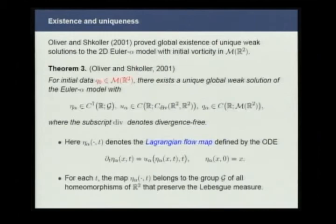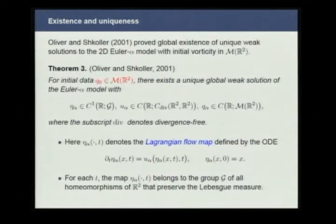Formally, we recover the Euler equation when alpha tends to zero. Oliver and Shkoller in 2001 proved that the two-dimensional Euler-alpha model is well posed with initial condition in the Radon measure space. They also show that there exists a unique Lagrangian flow map describing the evolution of the particles, and this flow map also preserves the Lebesgue measure.